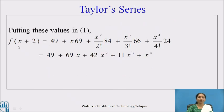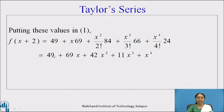Putting all these values into the Taylor series expansion, f(x+2) = 49 + 69x + (x²/2!)·84 + (x³/3!)·66 + (x⁴/4!)·24. Simplified, this gives: 49 + 69x + 42x² + 11x³ + x⁴.